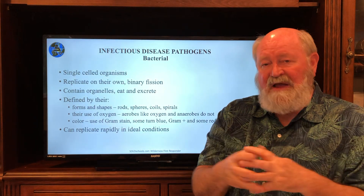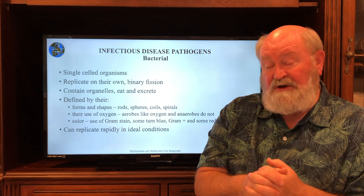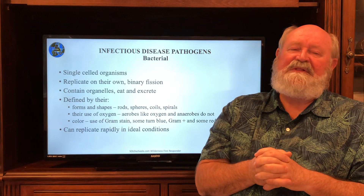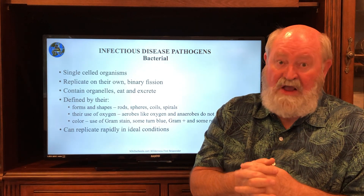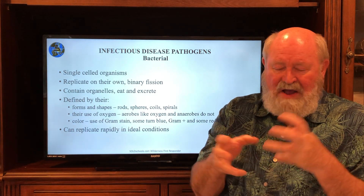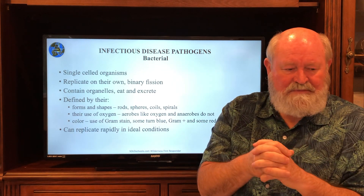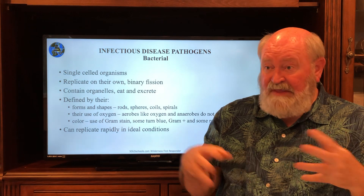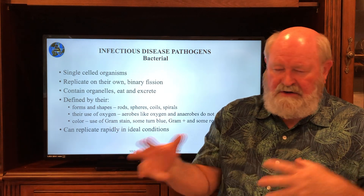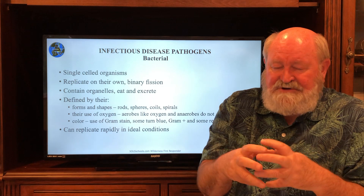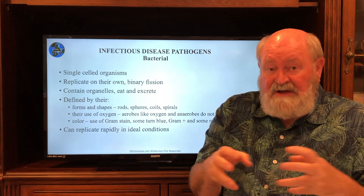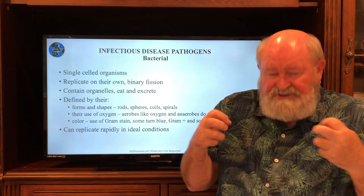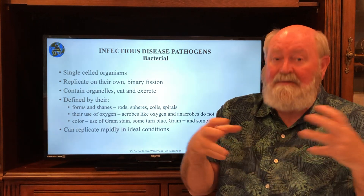Now we come to bacteria. Bacteria are huge compared to viruses — much bigger — and you can see them under a regular light microscope. They are also single-cell organisms, but these guys can replicate on their own. They are alive and replicate by binary fission: one becomes two, two become four. They also contain organelles; they may or may not have a nucleus depending on whether they're prokaryotes or eukaryotes. The genetic material is in there, as well as organelles like mitochondria and Golgi apparatus. These guys are alive — they are consuming, eating, excreting, and multiplying.